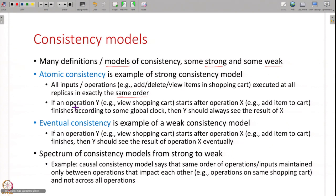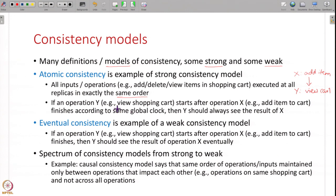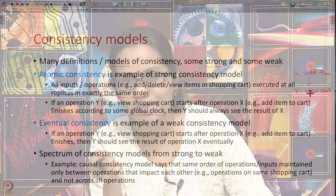There is also the additional condition that if some operation Y starts after operation X - suppose operation X is add item to a shopping cart and operation Y starts after X finishes, say view the shopping cart. Suppose the user made operation X and then makes a request for operation Y, and Y starts after X finishes according to some global clock. Then Y should always see the result of X - if you have added an item to a shopping cart and then view the shopping cart, that item should be visible. That is the definition of atomic consistency.